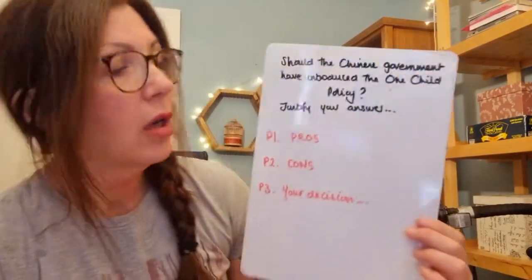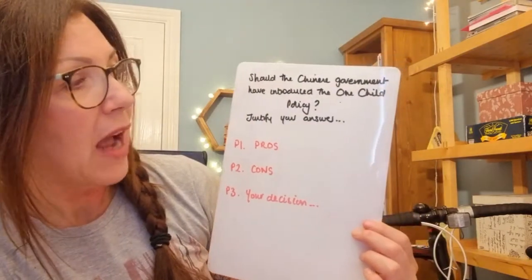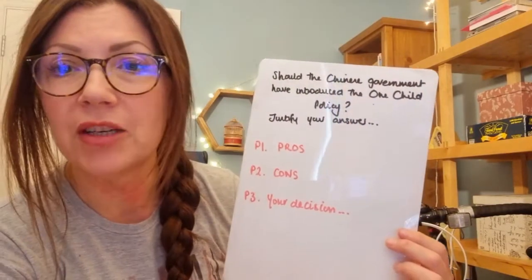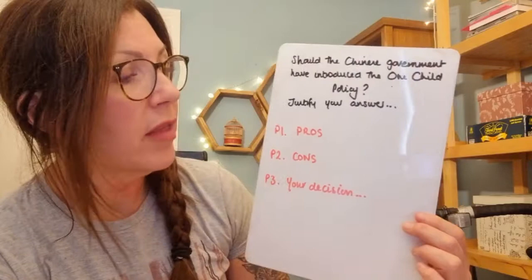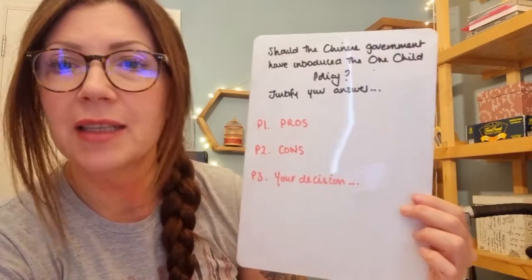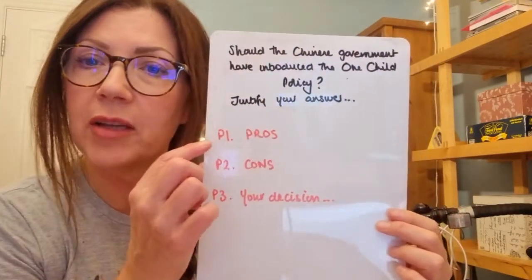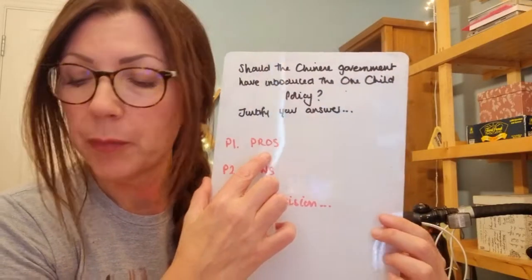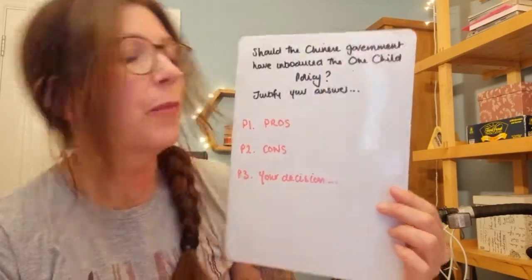The question is: should the Chinese government have introduced the one child policy — justify your answer. This answer will have three sections. The first paragraph will cover the pros, and we can use the connectives we just talked about.